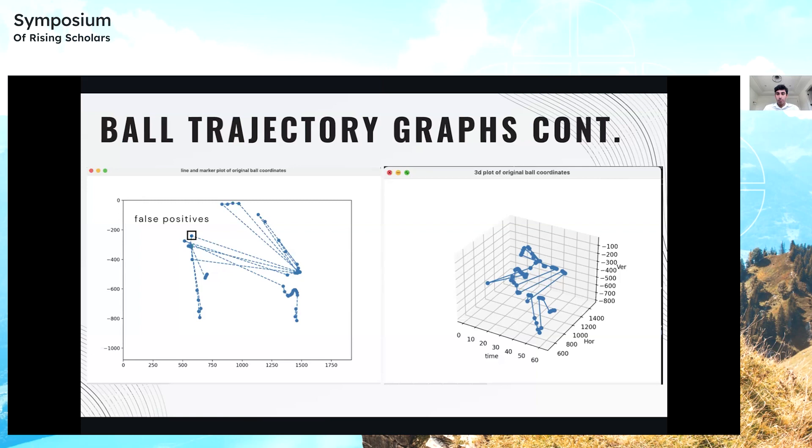On the bottom right, I have a 3D cutout of the ball coordinates with an axis of time, which also helped me eliminate these false positives.